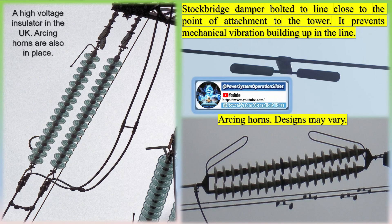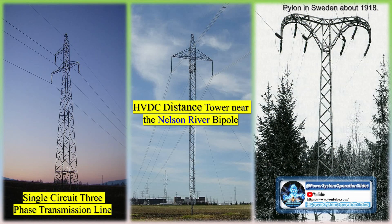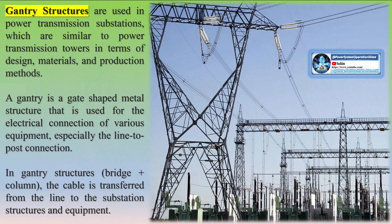The configuration of a transmission line tower depends upon many factors, including voltage, number of circuits, type of conductors, type of insulators, possible future addition of new circuits, tracing of transmission line, selection of tower sites, selection of rigid points, selection of conductor configuration, and selection of height for each tower.